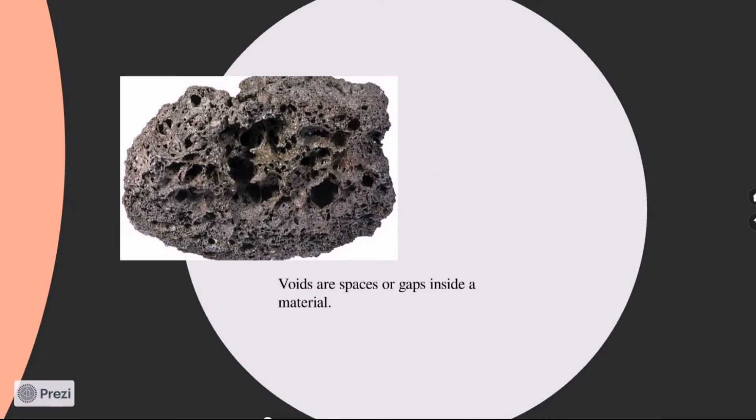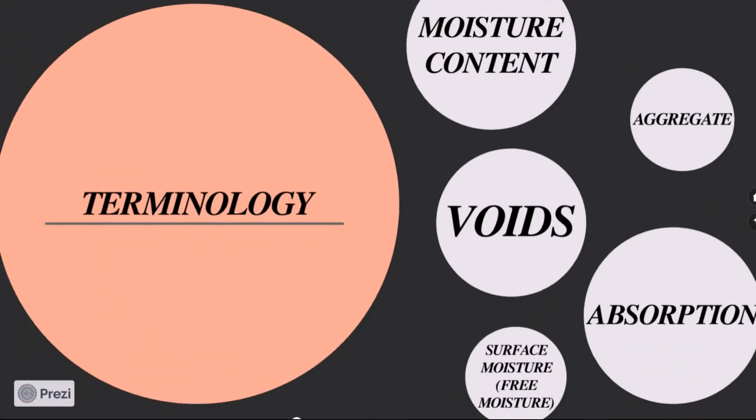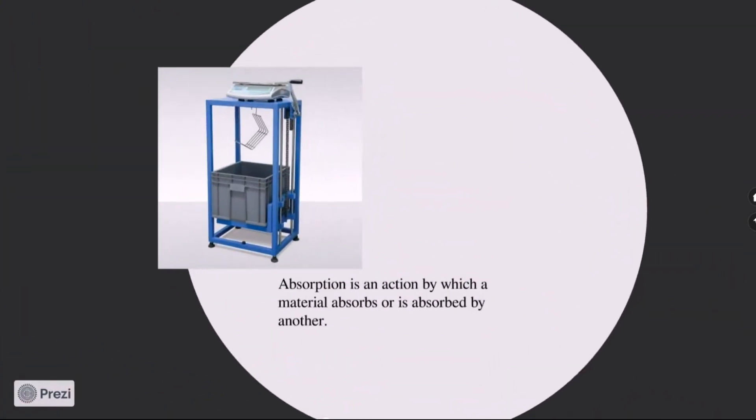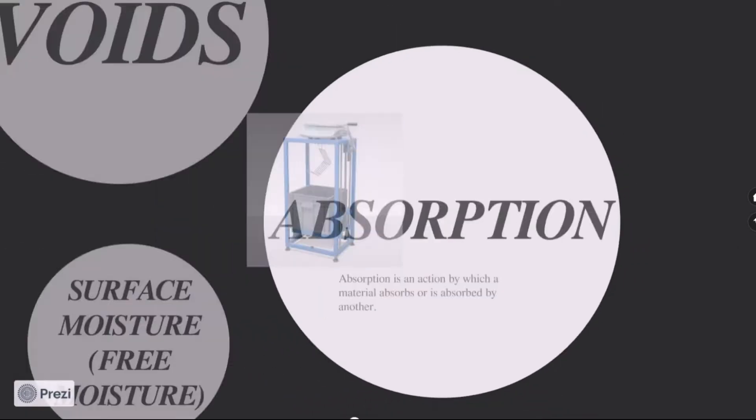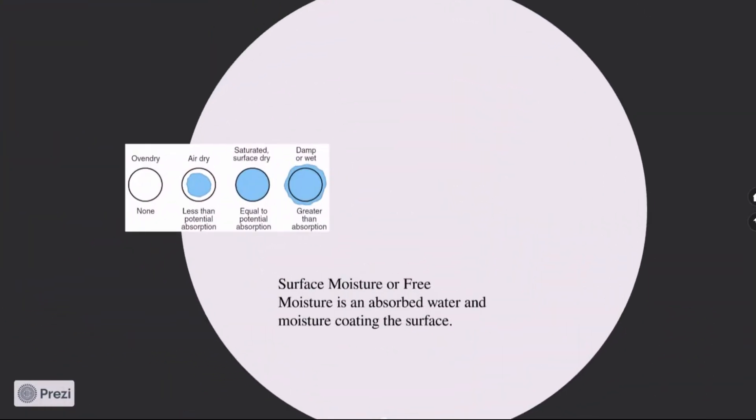Voids are spaces or gaps inside a material. The volume of void is equal to the difference between the aggregate mass gross volume and the volume occupied by the particles alone. Absorption is an action by which a material absorbs or is absorbed by another. This is a different process from adsorption. Surface moisture or free moisture is absorbed water and moisture coating the surface. It is the free water retained on the surfaces of aggregate particles and considered to be part of the concrete mixing water, as opposed to absorbed moisture.